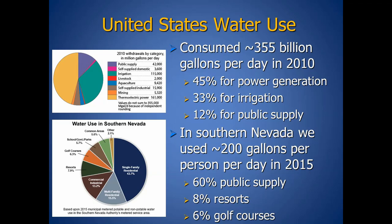In Southern Nevada, we used about 200 gallons per person per day according to a 2015 study. The biggest use here is public supply — single-family and multi-family residential. About 8% goes to resorts, 13% to industrial uses, and 6% to golf courses, meaning roughly 14% goes to our tourism industry. That's a fairly large chunk of our use.